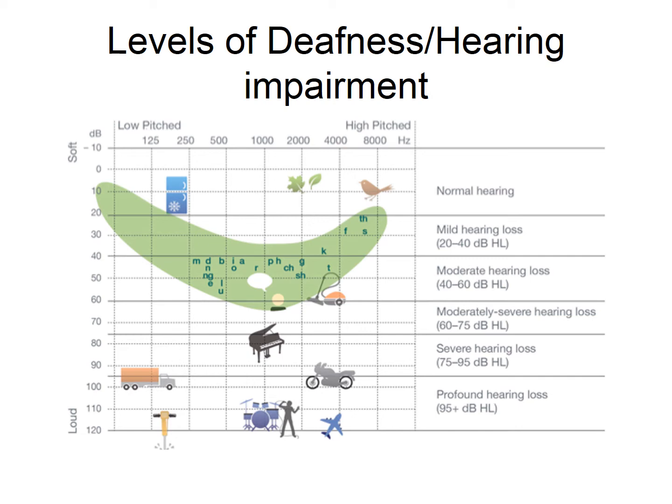Audiograms are used to plot what an individual can hear at the different levels of loudness and pitch. If you look again and focus on the green, boomerang-shaped shading on that picture, this is what's often called the speech banana, and it shows what loudness levels and what pitches make up the loudness and pitches of speech. For example, you'll see letters plotted — M is a lower-pitched sound, while F and S are higher-pitched sounds.